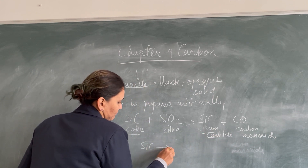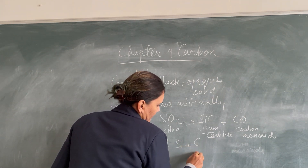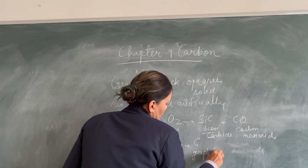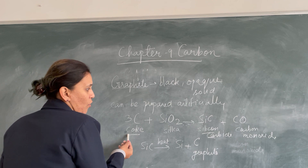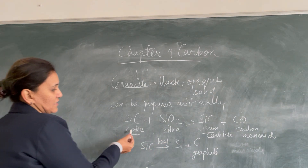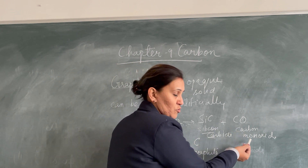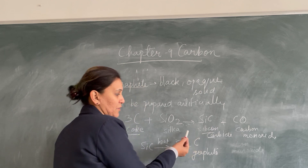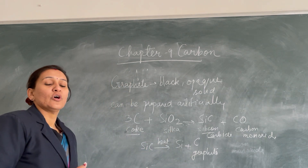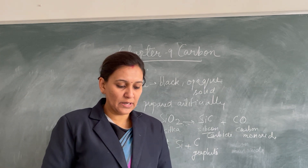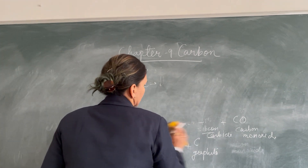When coke is strongly heated with silica, it gives silicon carbide (SiC) and carbon monoxide (CO). Since silicon carbide is not the end product we want, it is again strongly heated to give silicon and graphite. So this is how graphite can be prepared artificially by strongly heating coke with silica in an electric furnace.